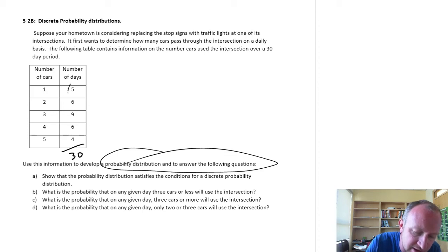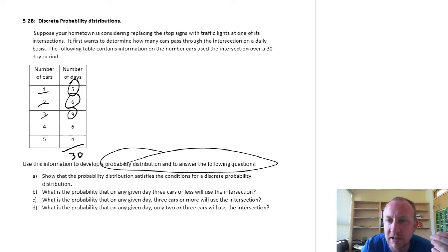Out of those 30 days, five of those days we saw only one car use the intersection. Six of those days we saw two cars. Nine days we saw three cars, etc. So using this information,